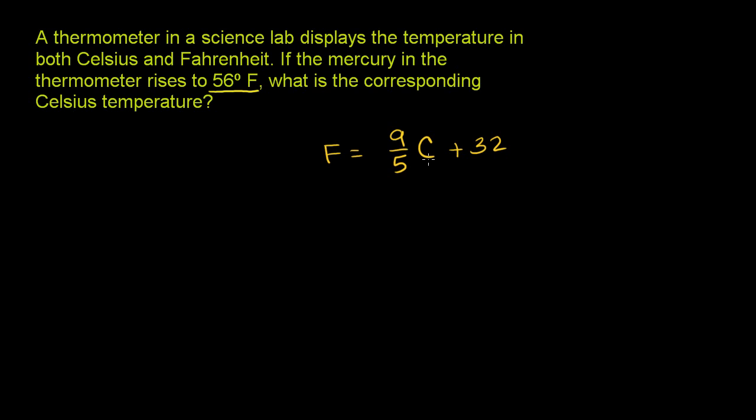When Celsius is 0, this is going to be 0. You add 32, that's going to be Fahrenheit. When Celsius is 100, 9 fifths times 100 is 180, plus 32 is 212. So this works.